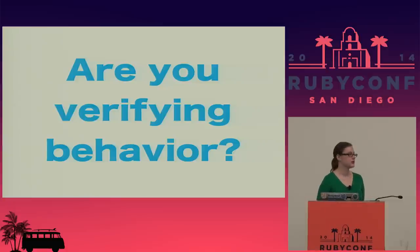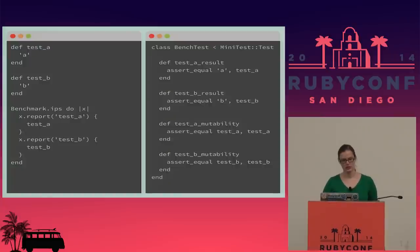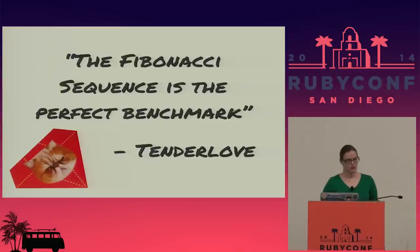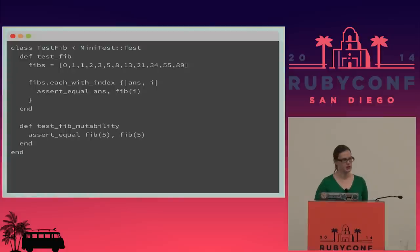The second question: are you verifying the behavior you're testing? The quick answer is you can write tests to do that. Here's an outline of how you might structure a benchmark comparing two methods, test A and test B, and then writing tests to verify that the output of those methods is what you expect. Tenderlove gave the quote at Keep Ruby Weird: 'the Fibonacci sequence is the perfect benchmark.' I wrote a test to verify a fib function — a whole bunch of the first sections of the Fibonacci sequence — then iterate over them and verify the output of `fib` is what I'd expect.